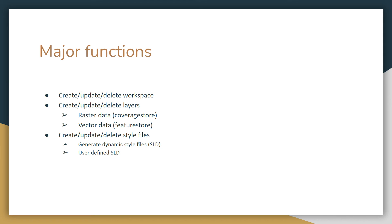GeoServerREST has three major functionalities: it can create, update, and delete workspaces; it can create, update, and delete layers — there are two types of data: raster data (generally called coverage store) and vector data (generally called feature store in GeoServer); and it can create, delete, and update style files, including generating dynamic styles from uploaded raster files or defining SLD files by passing parameters into a function.